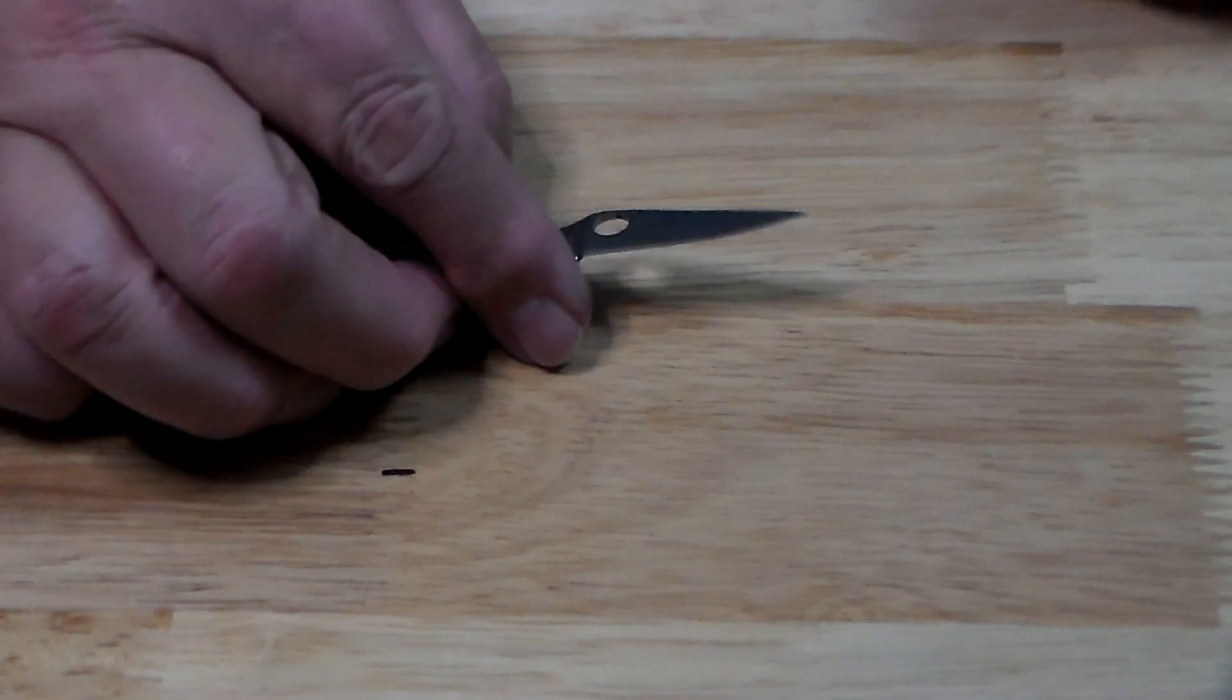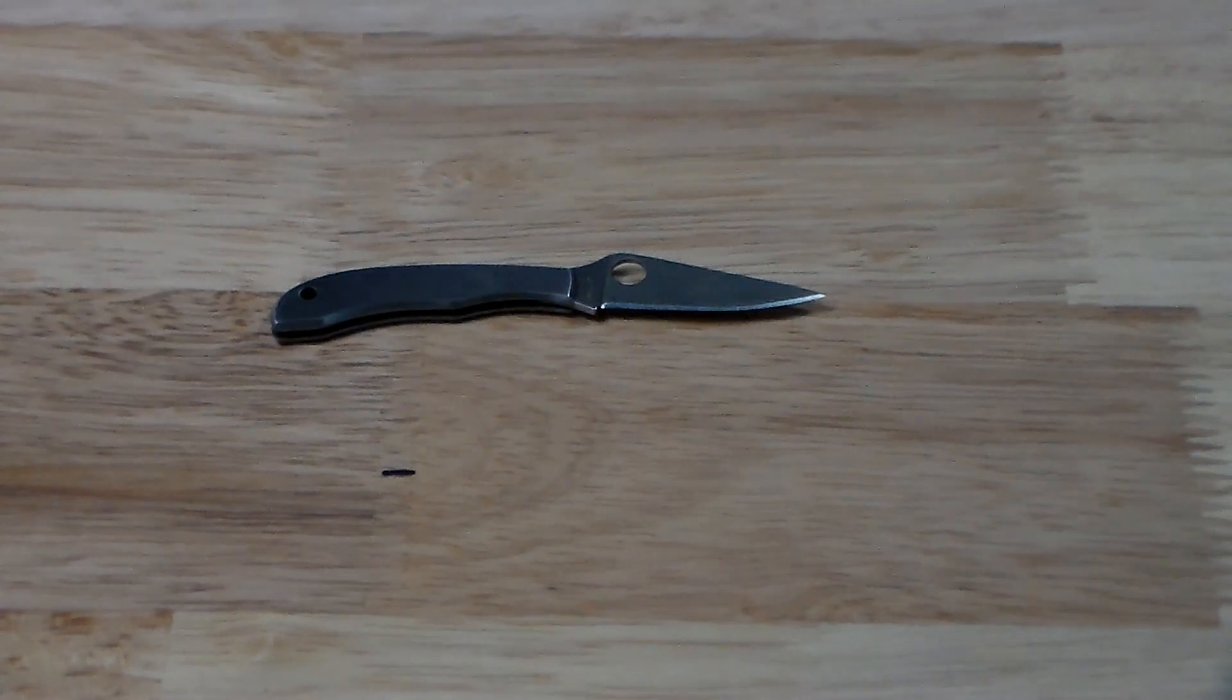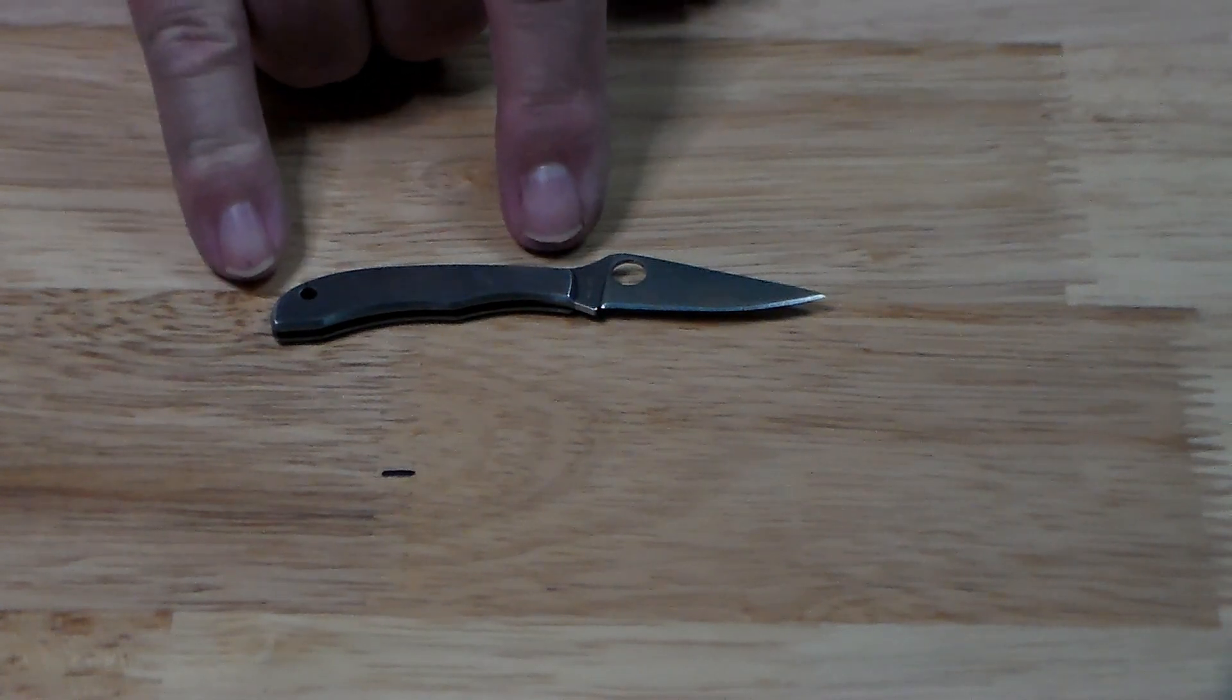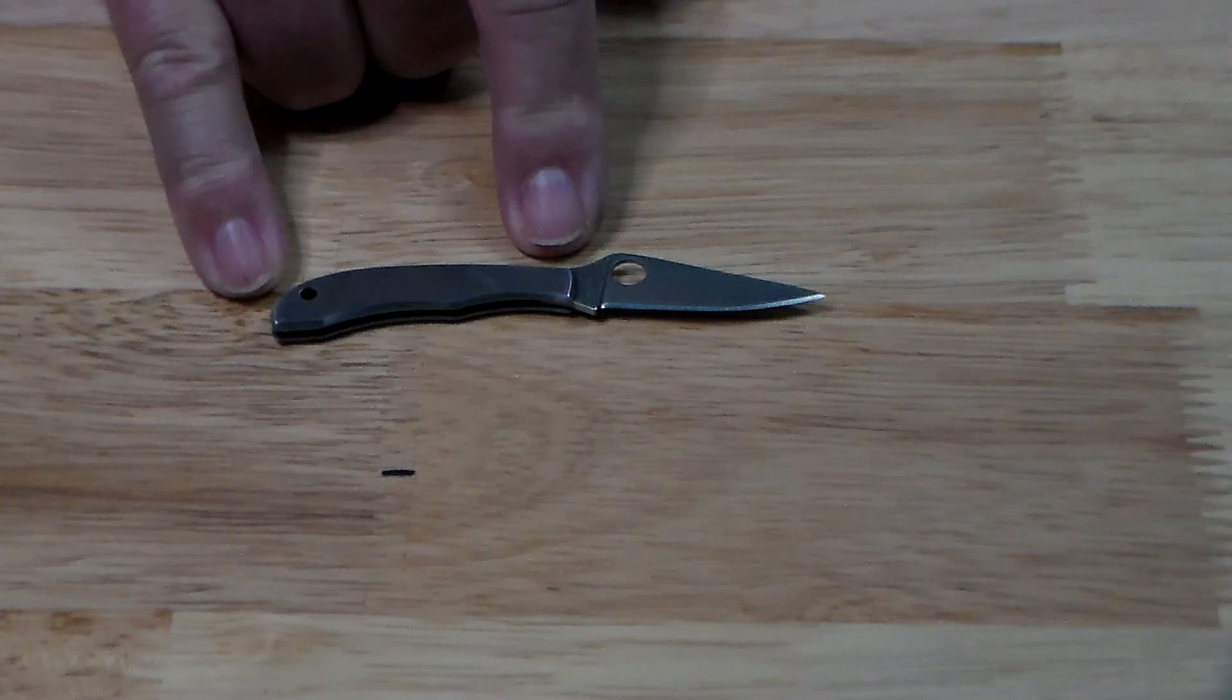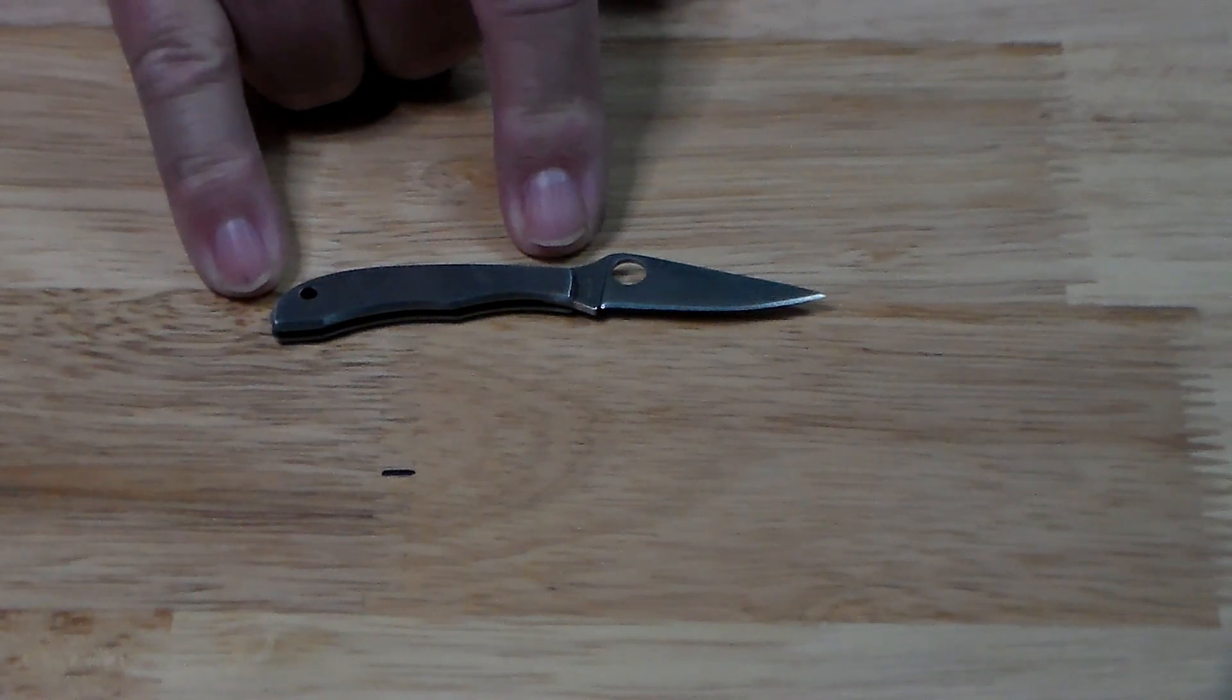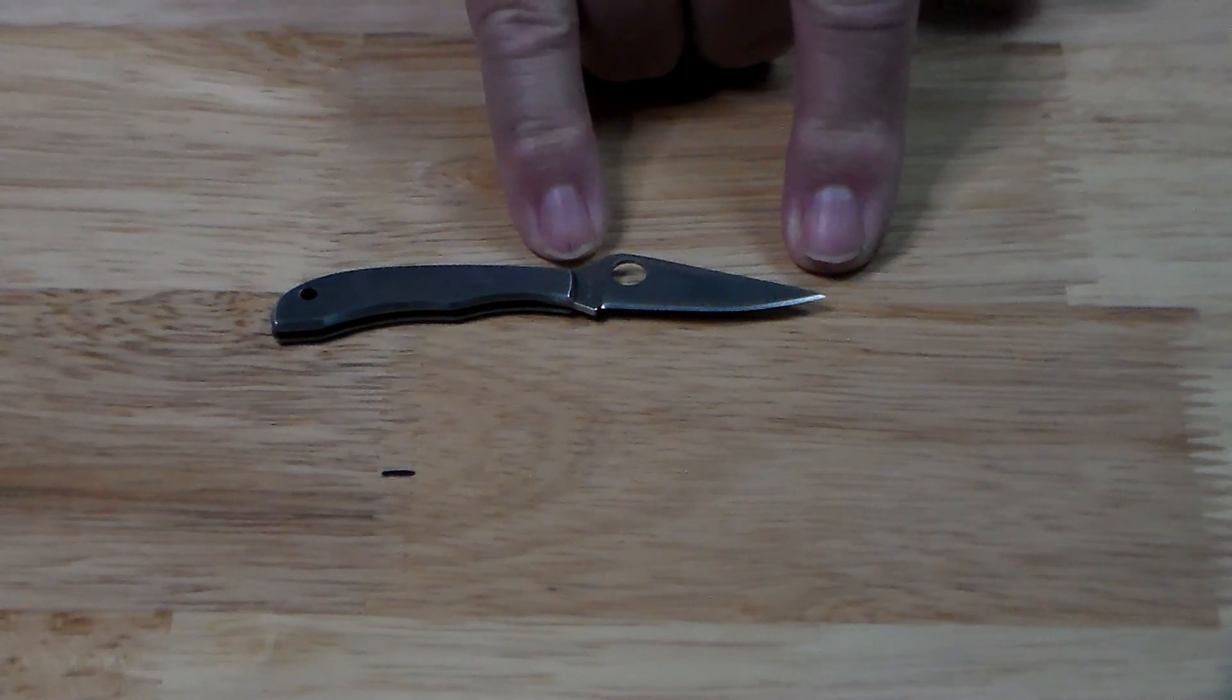But let's go over the specs real quick. Closed the handle is 2.06 inches, comes out to 52.3 millimeters. The blade is 1.62 inches, comes to 41.2 millimeters.